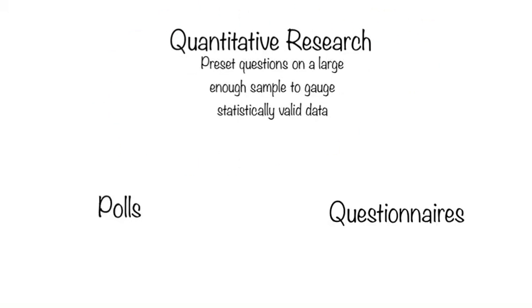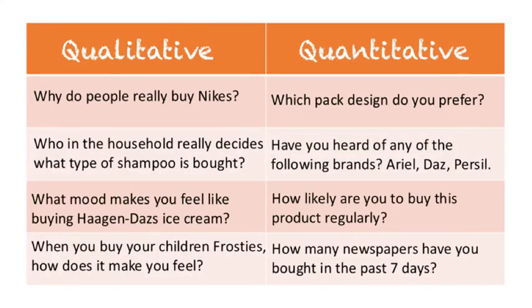The second category is quantitative research, which usually involves preset questions and a large enough sample to gauge statistically valid data. Examples include questionnaires and polls. This type of research aims to answer factual questions — for example, 'How many 16-to-20-year-olds have heard of Chanel No. 5?' Qualitative research, by contrast, aims to find out the feelings and psyche of consumers, provoking answers about mood or feeling, which open up many different responses. Quantitative research aims to gather statistical data with very direct questions.